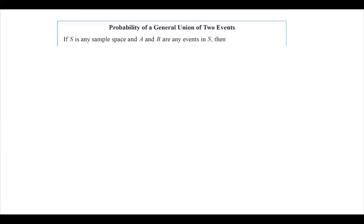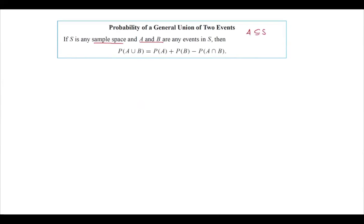Now that we have reviewed the basic material, we are going to prove some properties for probability. We will prove the probability of a general union of two events. If S is any sample space and A and B are any events — remember that A is a subset of S and B is a subset of S — this is how we defined an event. So here is S, this is event A, this is event B; they might have intersection or not, since it was not stated that they are mutually disjoint.